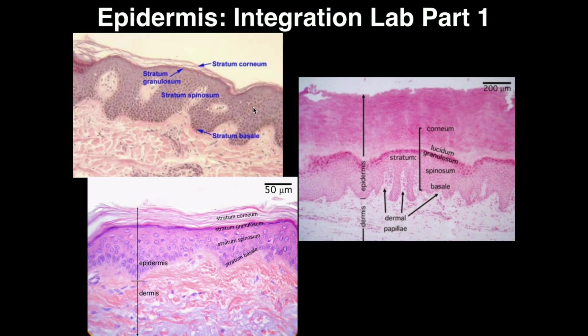For most areas of the skin — your arms, legs, stomach, back, face — from superficial to deep you have: stratum corneum, then the thin dark stratum granulosum, then the thick irregular stratum spinosum, and then the deepest is the stratum basale. These micrograph images show what you'd see looking at thin skin, which covers all those areas just mentioned. But there are a couple places in the body where you actually have thick skin.